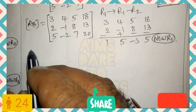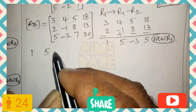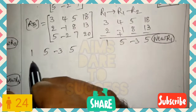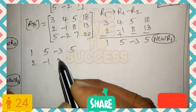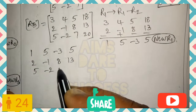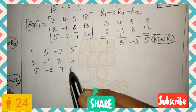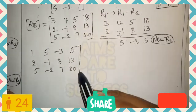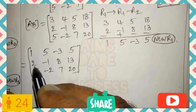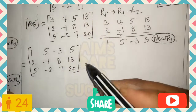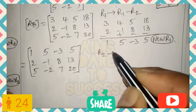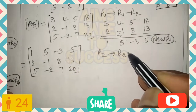R2 and R3 remain the same: R2 is 2, -1, 8, 13 and R3 is 5, -2, 7, 20. After rewriting, the first row's first element is now 1. Using this first row, we need to get 0 in the second and third row first elements.